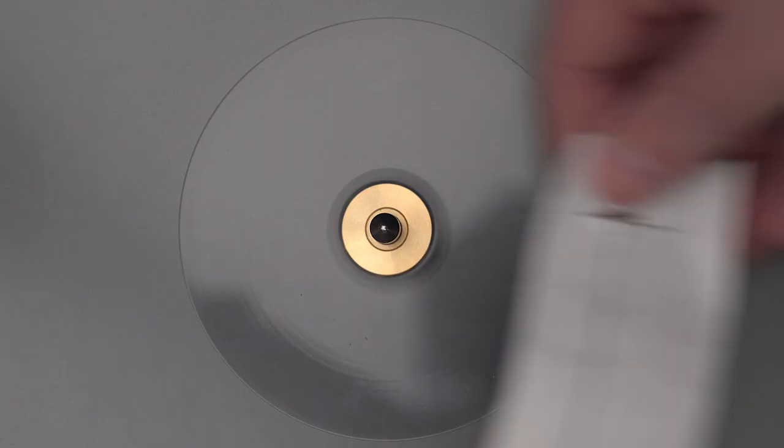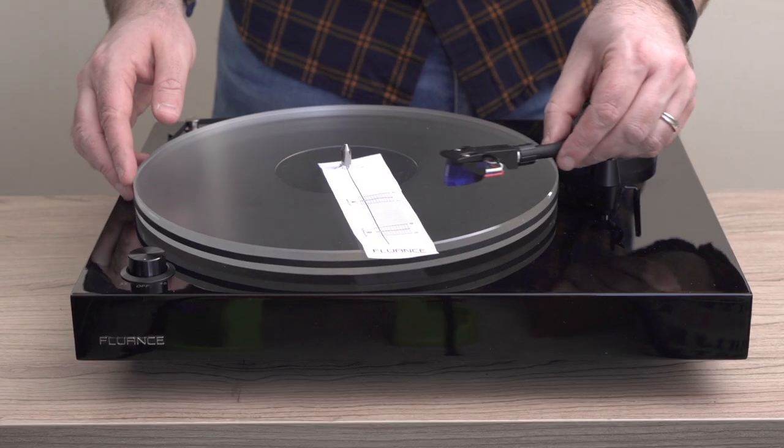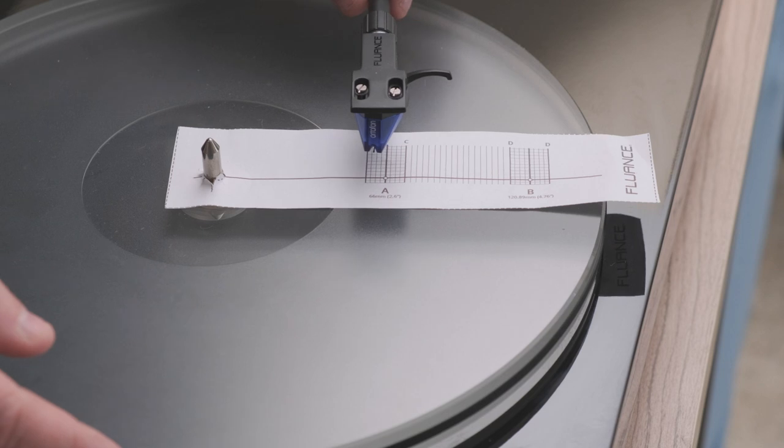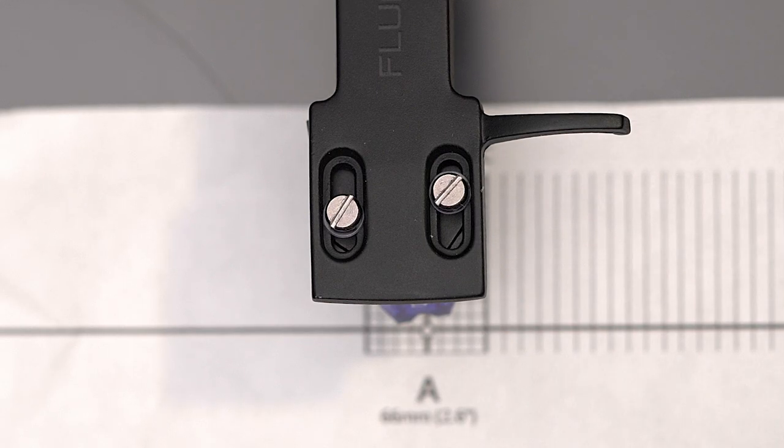Place the protractor on the spindle and align the stylus tip with point A. In this example, the cartridge is way off.